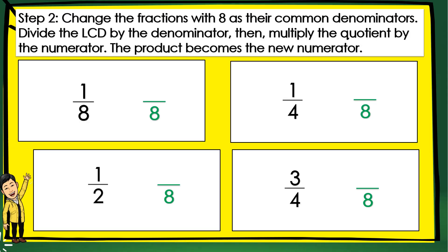Next, Step 2, we have to change the fractions with 8 as their common denominators. Divide the LCD by the denominator, then multiply the quotient by the numerator. The product becomes the new numerator. Let's try. So, here, we have 1/8. So, 8 divided by 8 is 1. And then, 1 times 1 is 1. So, the answer is 1/8.